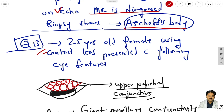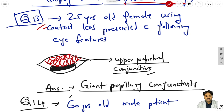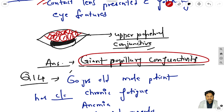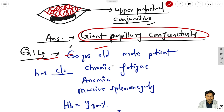Question 13: a 25-year-old female using contact lenses presents with the following finding. This is the upper palpebral conjunctiva, and if such a type of feature is present, it is clearly giant papillary conjunctivitis.